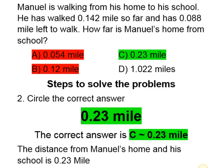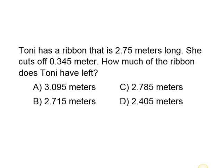Let's move to a similar problem. Toni has a ribbon that is 2.75 meters long. She cuts off 0.345 meter. How much of the ribbon does Toni have left? Answer choice A is 3.095 meters, B is 2.715 meters, C is 2.785 meters, and D is 2.405 meters.